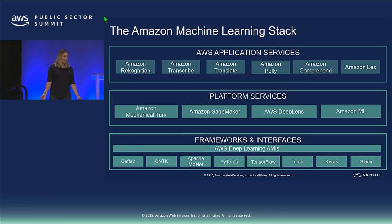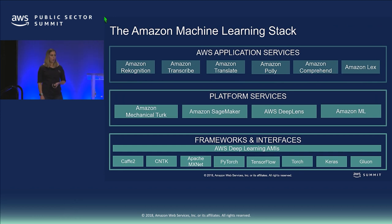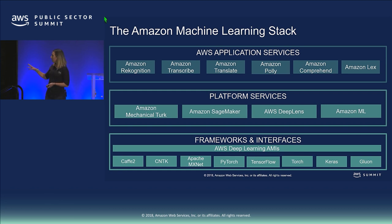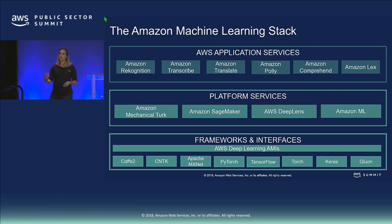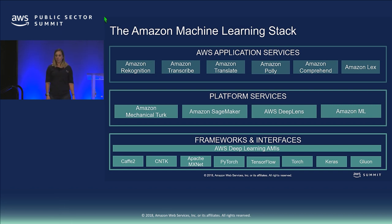Here's the stack broken out. We have Amazon Rekognition for object detection, scene detection, and facial analysis. We have Translate, Transcribe, and Polly for natural language processing — translating between languages, speech to text, and text to speech. We have Comprehend for text analytics, and Amazon Lex, which is the same engine powering Amazon Alexa today.